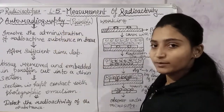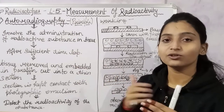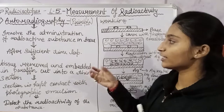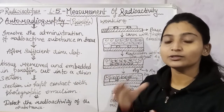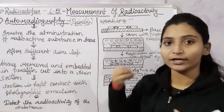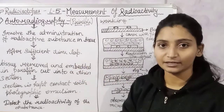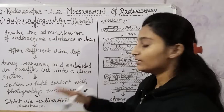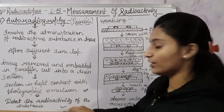First of all, what is the Autoradiography principle? In the Autoradiography principle, we need to know the radioactive element. We need to embed it in a tissue. After that, we will extract the tissue. After that, we will put a paraffin layer. After a definite proportion of time, we will know the radioactivity.